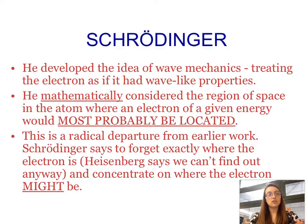And so this was all mathematically done. So he actually created this large equation in which he considered the region of space in the atom where the electron will most probably be located. So because of the Heisenberg uncertainty principle, he knew that he could never specifically tell where an electron was, so he now looked at statistics and looked at probability.